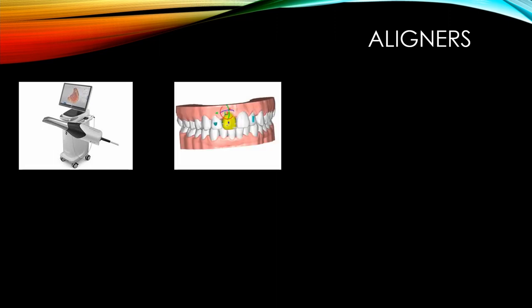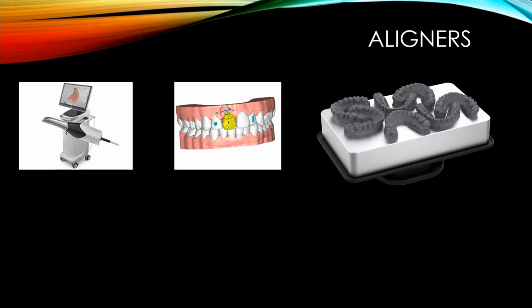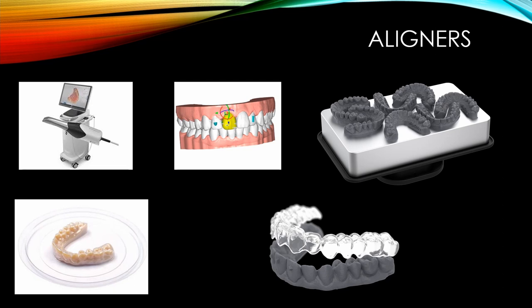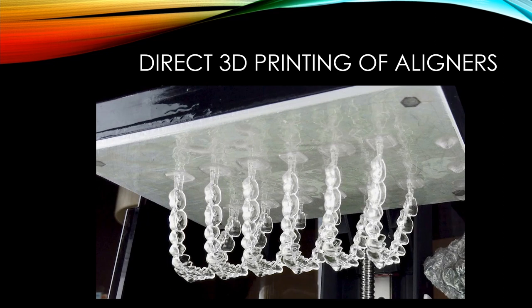In aligner therapy, 3D printing is an essential element. The process starts with scanning the patient's dentition, sending the scan to aligner software where teeth are moved, the treatment plan is created, attachments are added, and then each step is 3D printed as a separate model. These models are used to pressure-form aligner sheets, which are then trimmed and sent to the patient. Recently, clear and biocompatible resin materials have enabled direct 3D printing of aligners, skipping the model step — though this is still relatively new and we await more research.